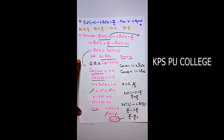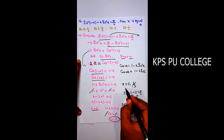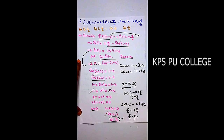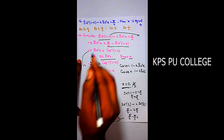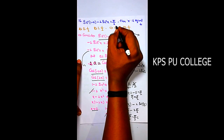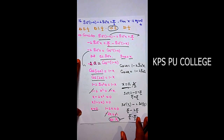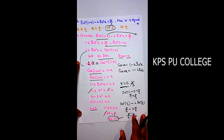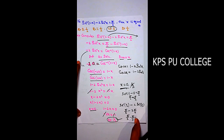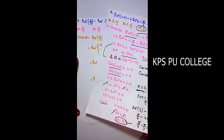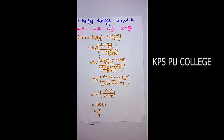Since x = 1/2 does not satisfy the original equation, it can be neglected. The only valid value is x = 0. Option C is the right answer.